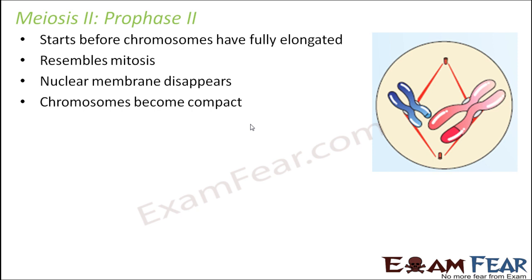This prophase 2 should start even before the chromosomes get converted back to chromatin, because by the end of telophase 1 the chromosomes begin to uncoil. So before they get completely elongated, this phase starts where chromosomes again get compact, the nuclear membrane vanishes, and the centrioles begin forming the spindles — the microtubules — again.